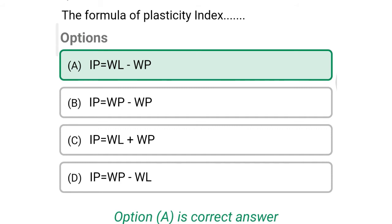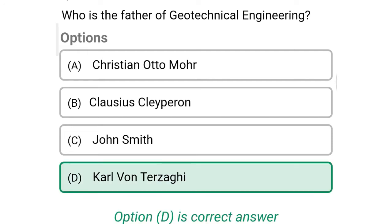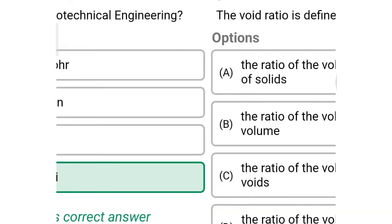So next question: who is the father of geotechnical engineering? Option A: Christine Ottermore. Option B: Clasius Clayprint. Option C: John Smith. Option D: Carl Von Terzaghi. So the correct answer is Option D, Carl Von Terzaghi.